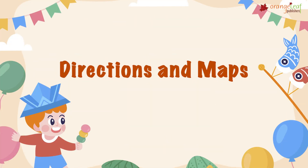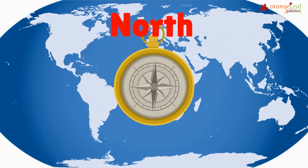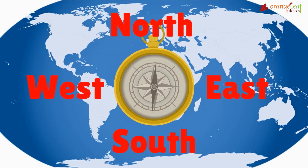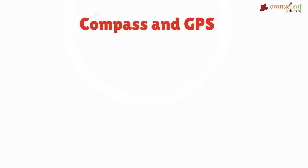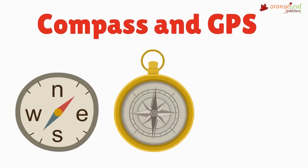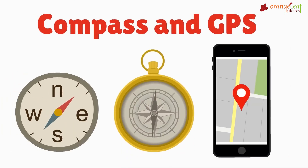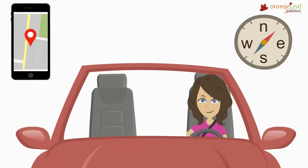Directions and Maps. Directions and maps assist us in pinpointing the location of a specific region or a thing. The four principal directions are north, east, west, and south. A spot can also be used to pinpoint an object on a map.